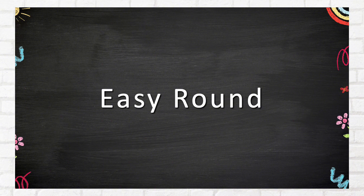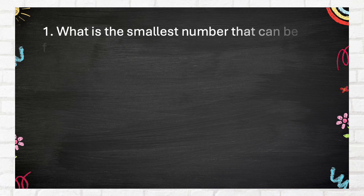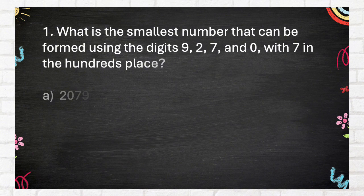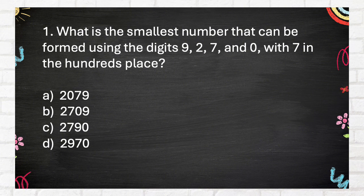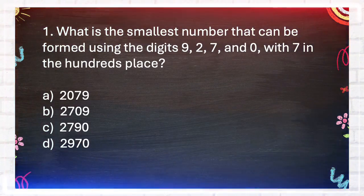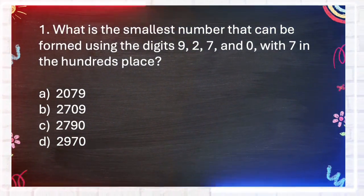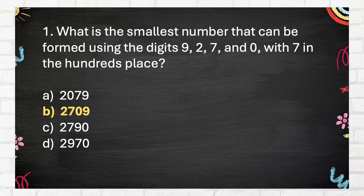Easy Round. Question number 1. What is the smallest number that can be formed using the digits 9, 2, 7, and 0, with 7 in the hundreds place? A. 2079, B. 2709, C. 2790, D. 2970. The answer is B. 2709.